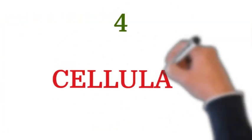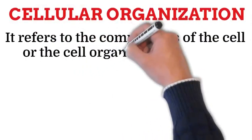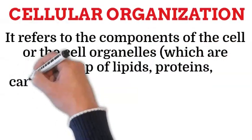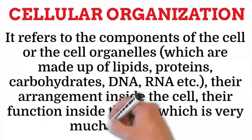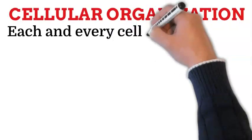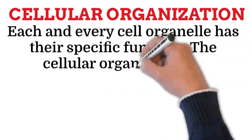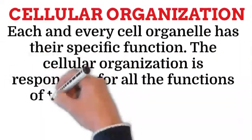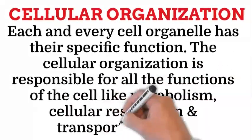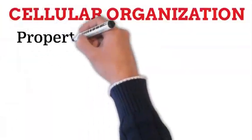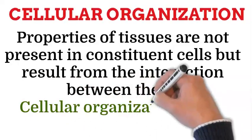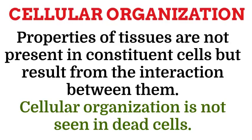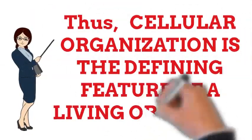The fourth characteristic is cellular organization. Cellular organization refers to the components of the cell — the cell organelles — which are made up of lipids, proteins, carbohydrates, DNA, RNA, etc., their arrangement inside the cell, and their function, which is very organized. Each cell organelle has a specific function; cellular organization is responsible for all cell functions like metabolism, cellular respiration, and transportation. Properties of tissues are not present in constituent cells but result from the interaction between them. Cellular organization is not seen in dead cells, thus it is a defining feature of a living organism.